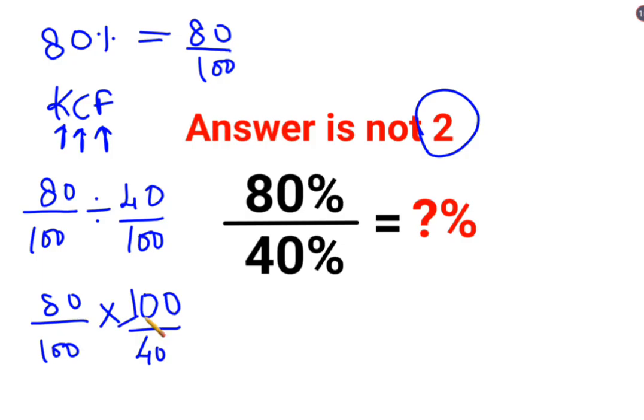So your 100s get cancelled — this is 1 times 2, and the answer is 2. But still I am saying the answer is not 2. Why?